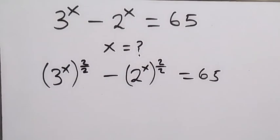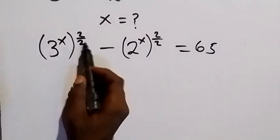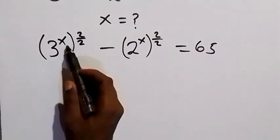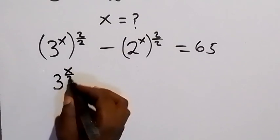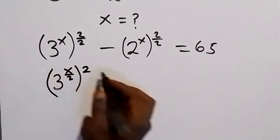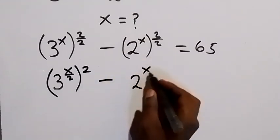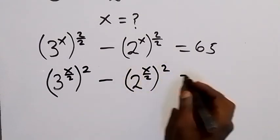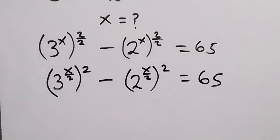From here we can rewrite this in another way. Since the powers multiply, we take the 2 inside and we are going to have 3 raised to power x over 2, then raised to power 2, minus 2 raised to power x over 2, then raised to power 2, which is equal to 65.